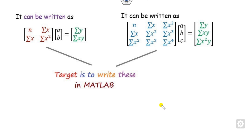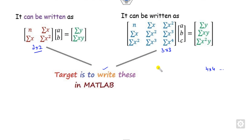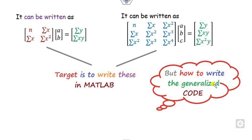Our target is to write the MATLAB code for such equations. If you closely look, the size of the matrix for a linear equation is 2×2, for quadratic it is 3×3, and for cubic it will be 4×4. So how can you write a generalized code? In this video, we will see how to write a single code that works for all these cases.